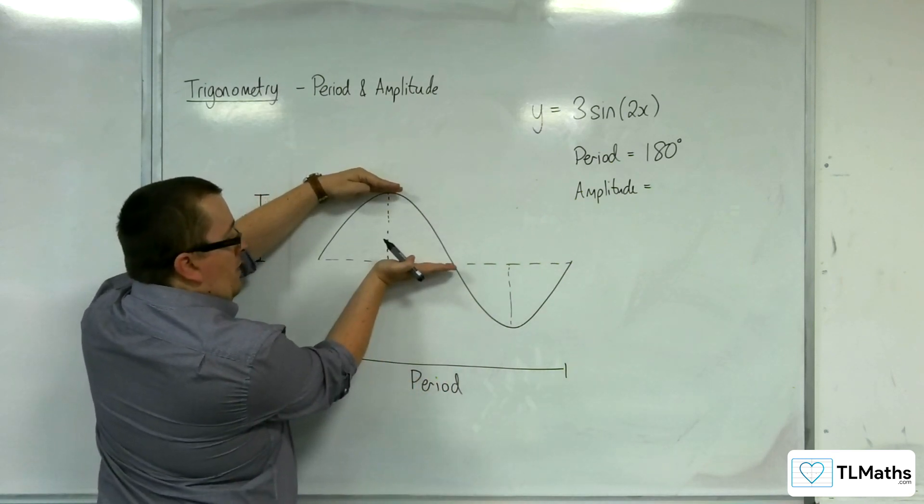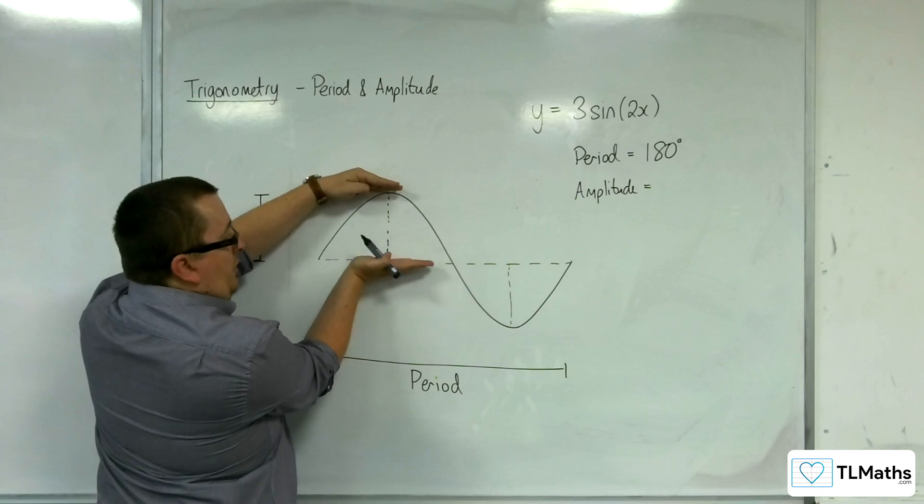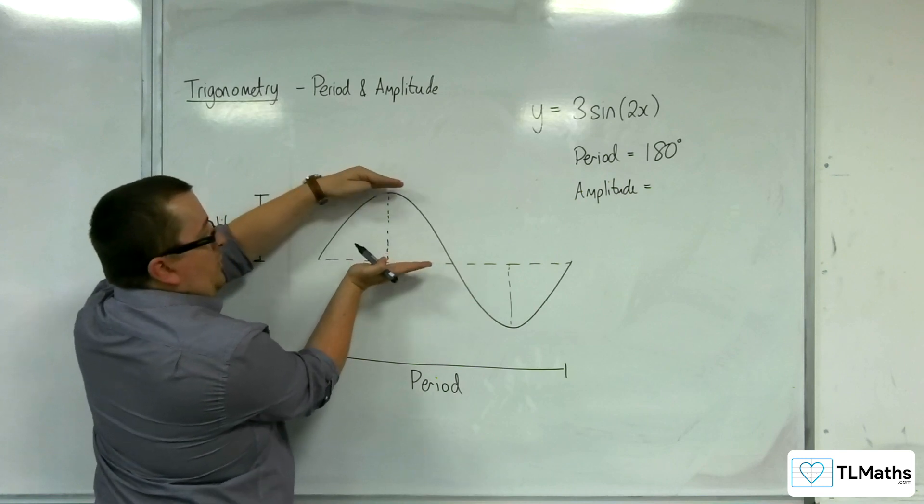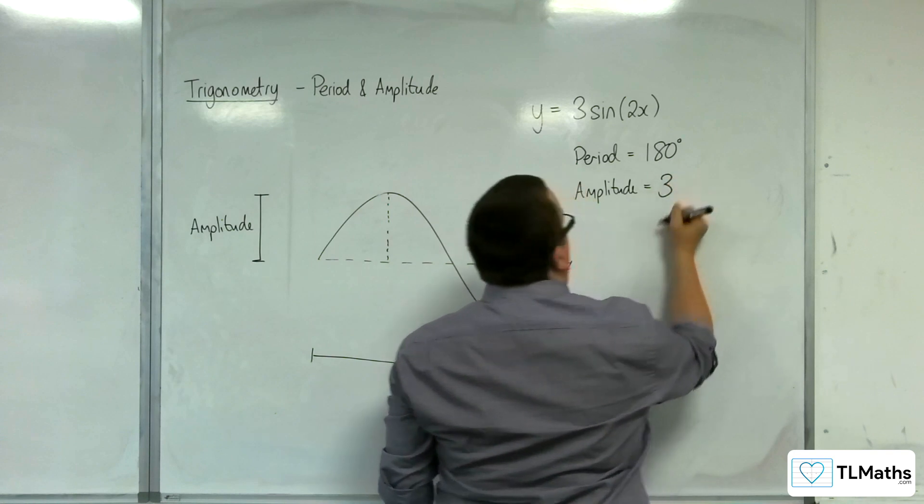If this is the 0 line, then it's going from 0 to 3, that is the amplitude. So the amplitude would be 3.